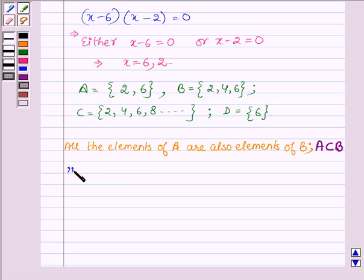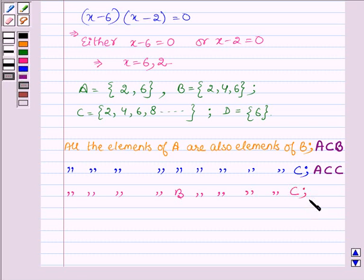Also, all the elements of A are elements of C. So A is a subset of C. Similarly, B is a subset of C.